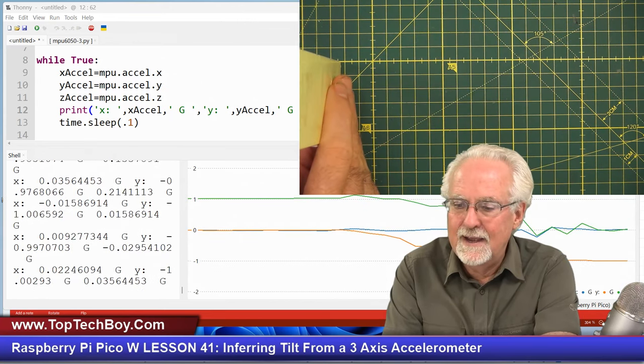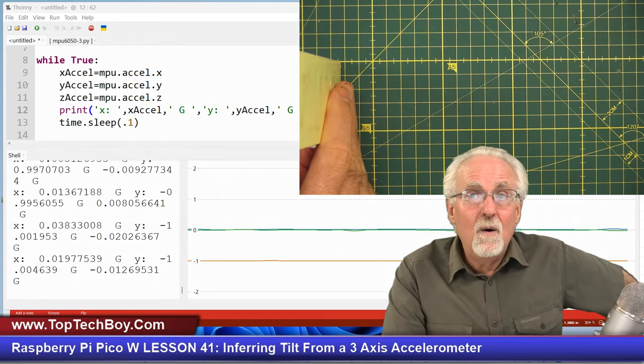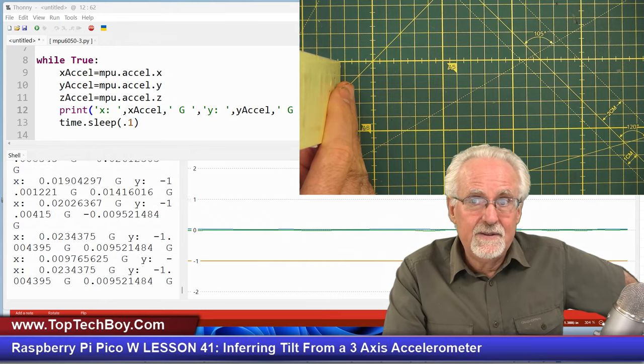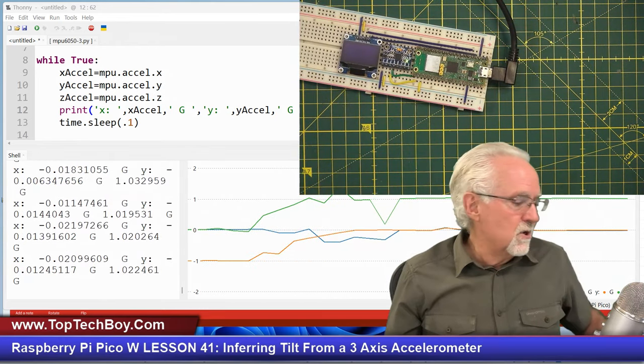What if I turn it up like this? Now what is happening? Now y is misbehaving and x and z are behaving properly. So what is going on?